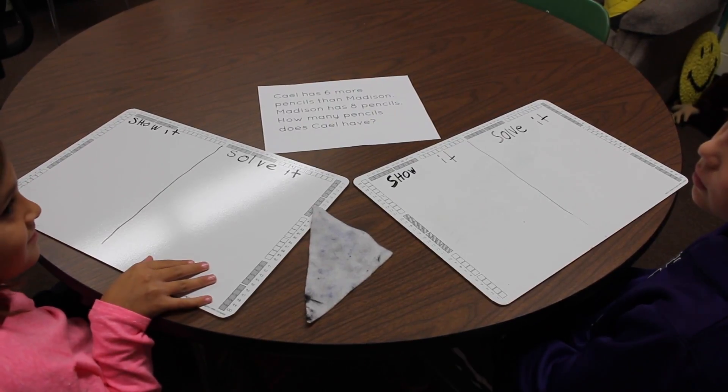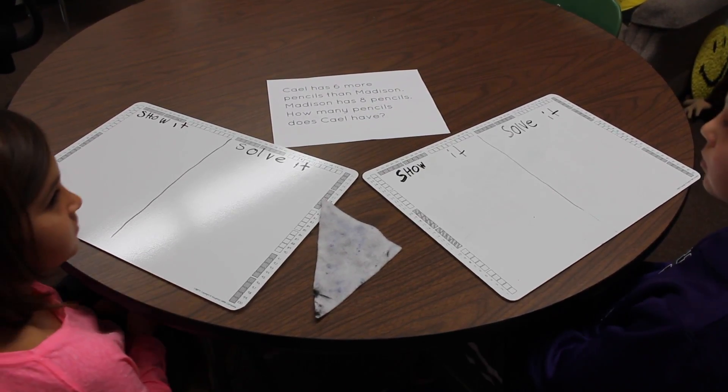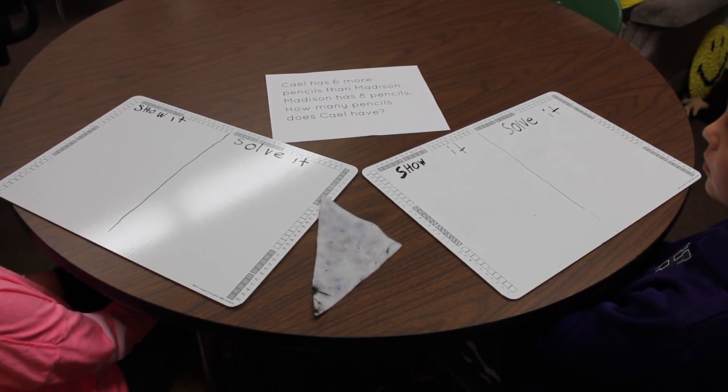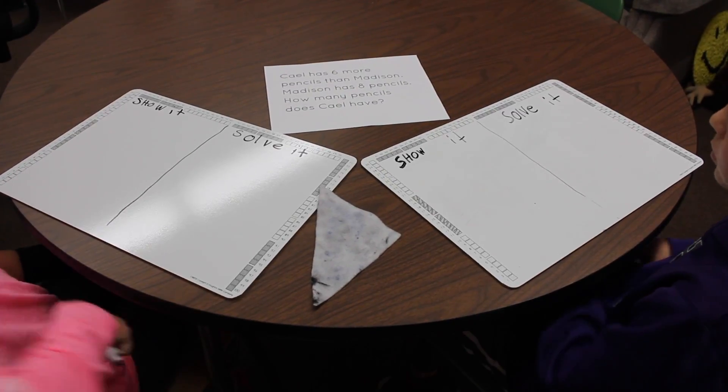Okay, so do you see how we're going to compare Cal's pencils to Madison's pencils? And that will help us figure out how many pencils Cal has. Could you make some comparison bars to show this story?